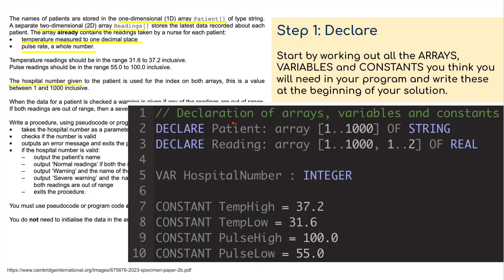Here is my code. The declaration of arrays, variables, constants: I want to declare the patient as a 1D array ranging from one to a thousand, strings because it's going to store patients' names. I'm going to declare readings, a 2D array, so it's going to store one to a thousand and two different things: the pulse and the temperature. These are going to be real numbers.